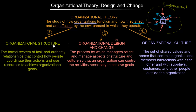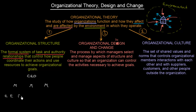The first main block is organizational structure. This is the formal system of task and authority relationships that control how people coordinate their actions and use resources to achieve organizational goals. You are going to see sketches like this one: at the top there is a CEO, then there are lower-level managers — manager one, manager two, manager three — and then we have employees underneath each manager.